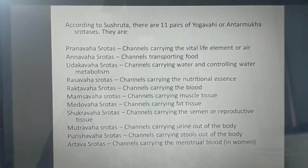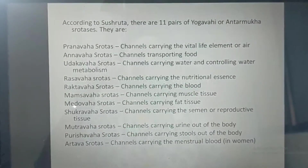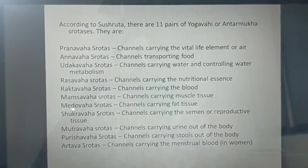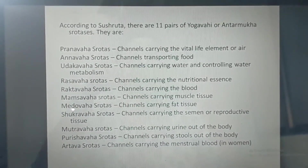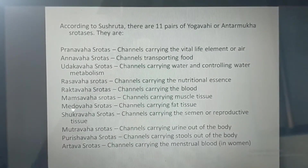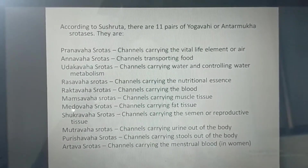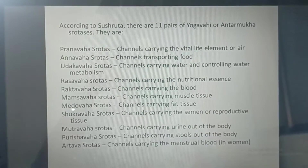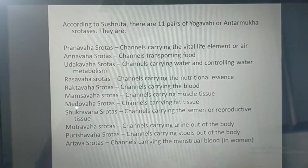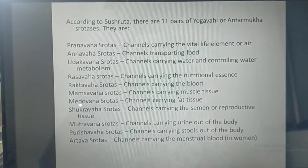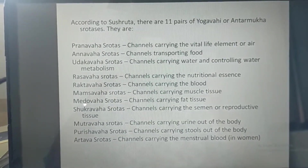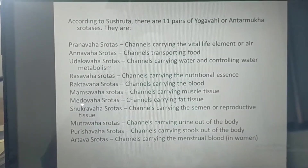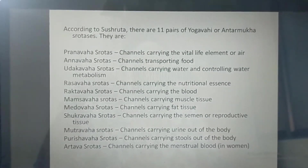Sushruta has described 11 pairs of Yogvahi Srotas. The Srotas described by Sushruta are largely similar, with some differences. There are also three additional pairs, making 11 pairs of Srotas according to Sushruta.